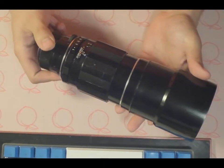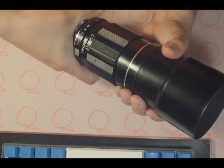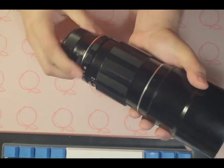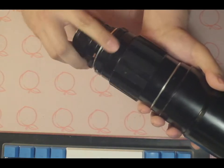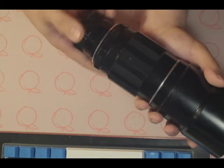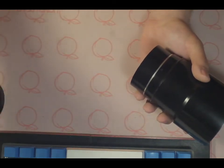You extend it out to minimum focus. Grab onto the end here, grab onto this front, give it a good twist. There we go. This back half will spin off. There we go. That's that. I'll set this over here.